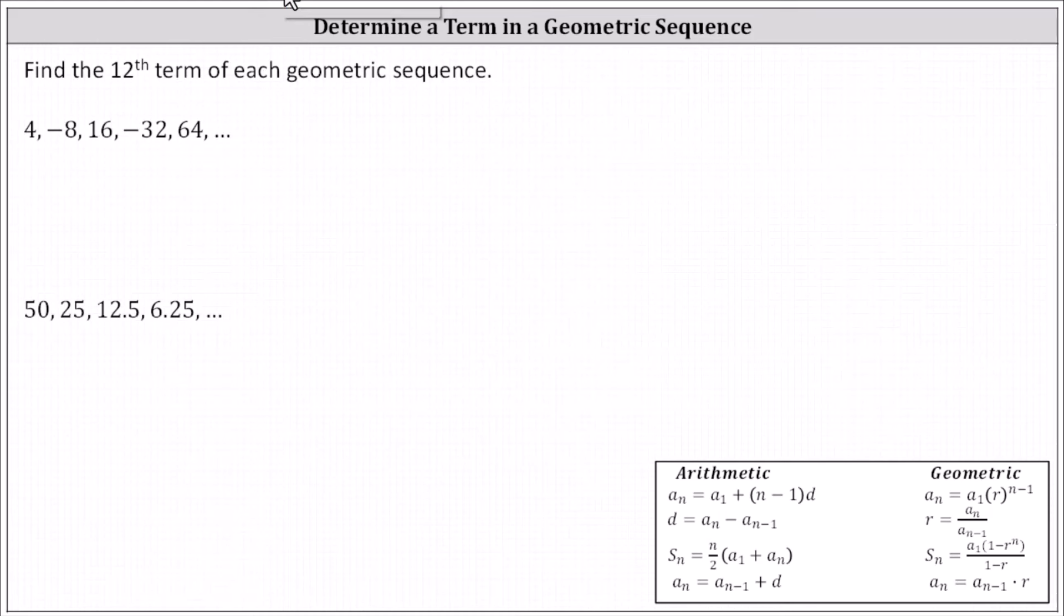Find the twelfth term of each geometric sequence. Because both sequences are geometric, we know we have a common ratio r, where the common ratio r is equal to a sub n divided by a sub n minus one. This means we can determine the common ratio r by taking any term in the sequence, except the first term, and dividing by the previous term.